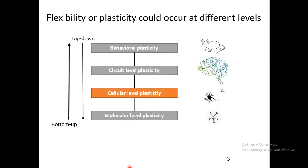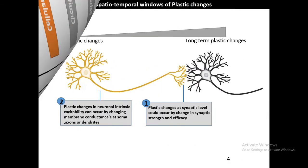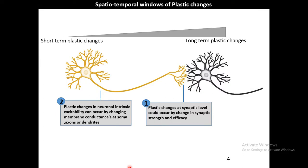That degree of flexibility is known as plasticity of our nervous system. Plasticity could occur at different levels, starting from the behavioral level to circuit level to cellular and molecular level. Today I would talk about cellular level of plasticity, and plasticity in the junction between two neurons — that means in synapses.